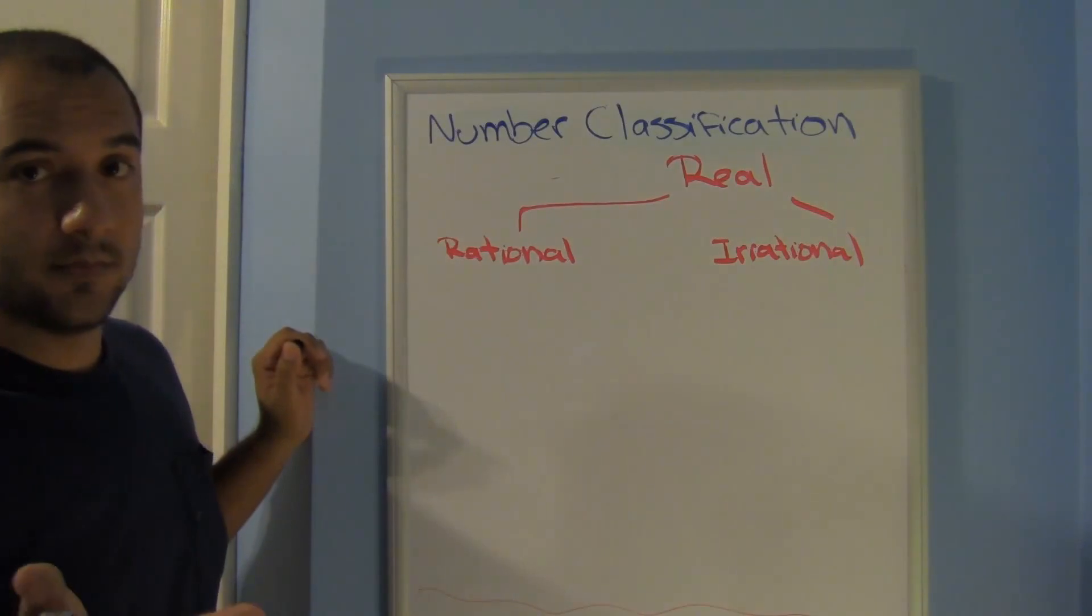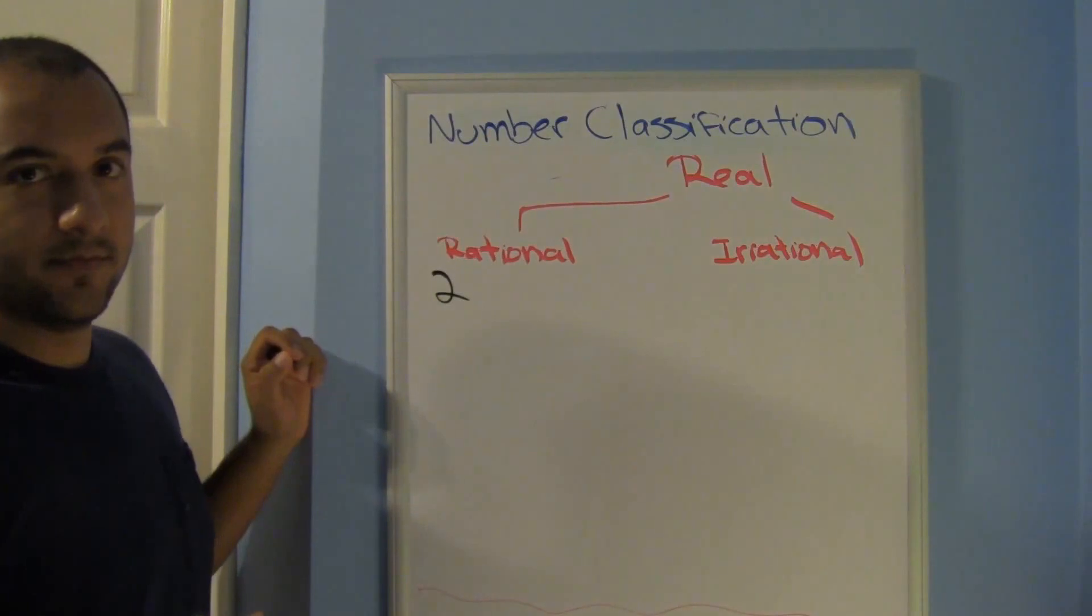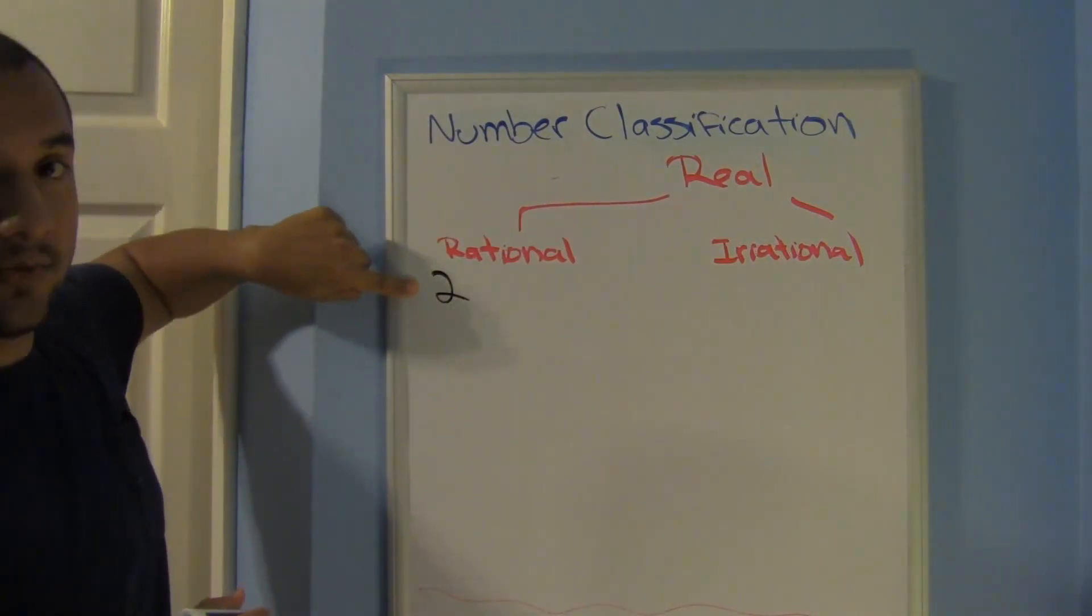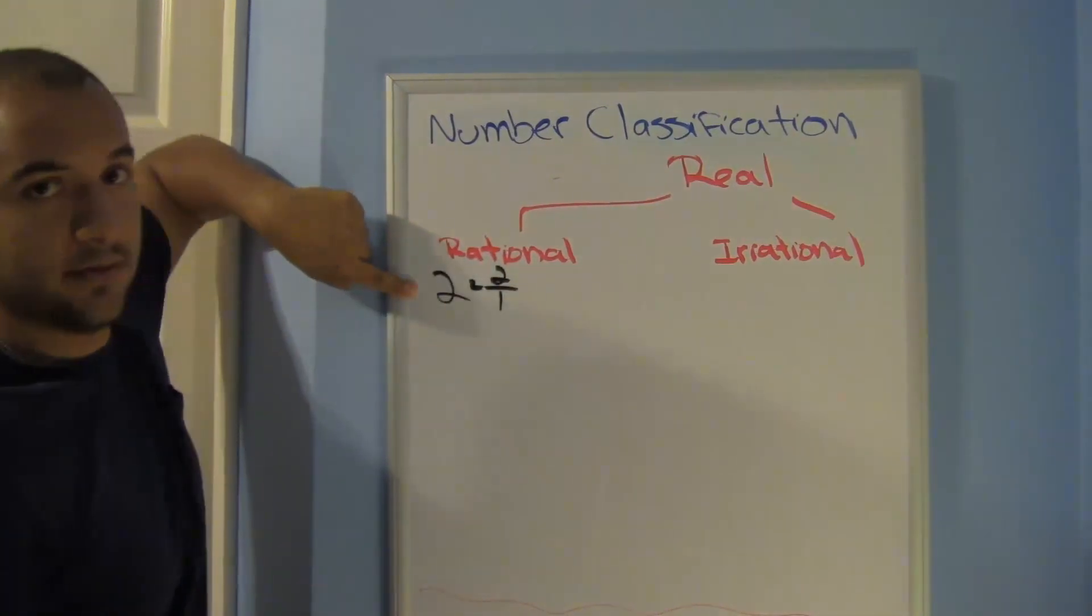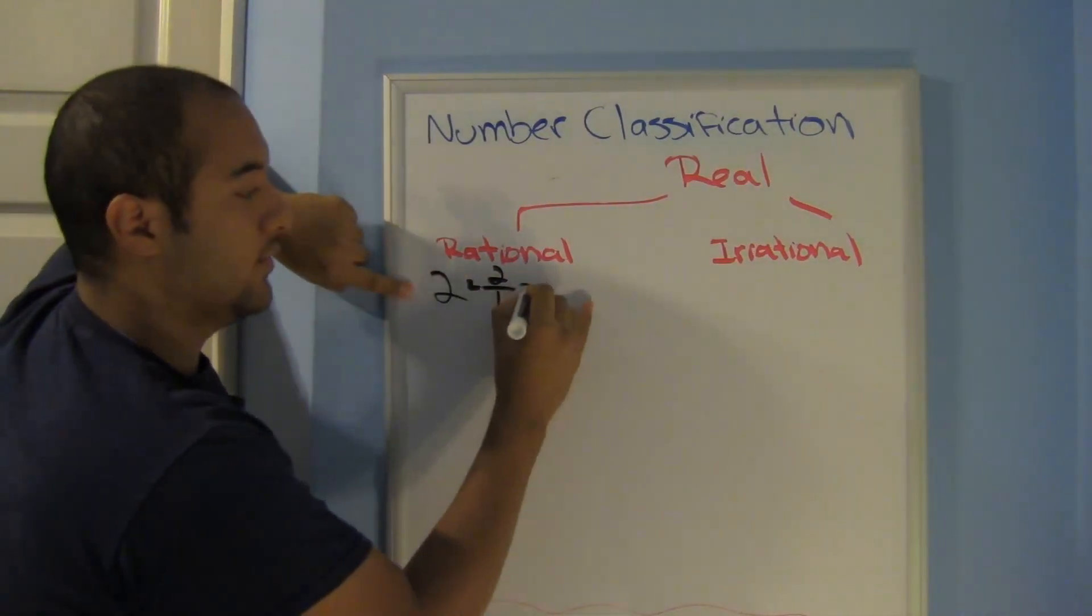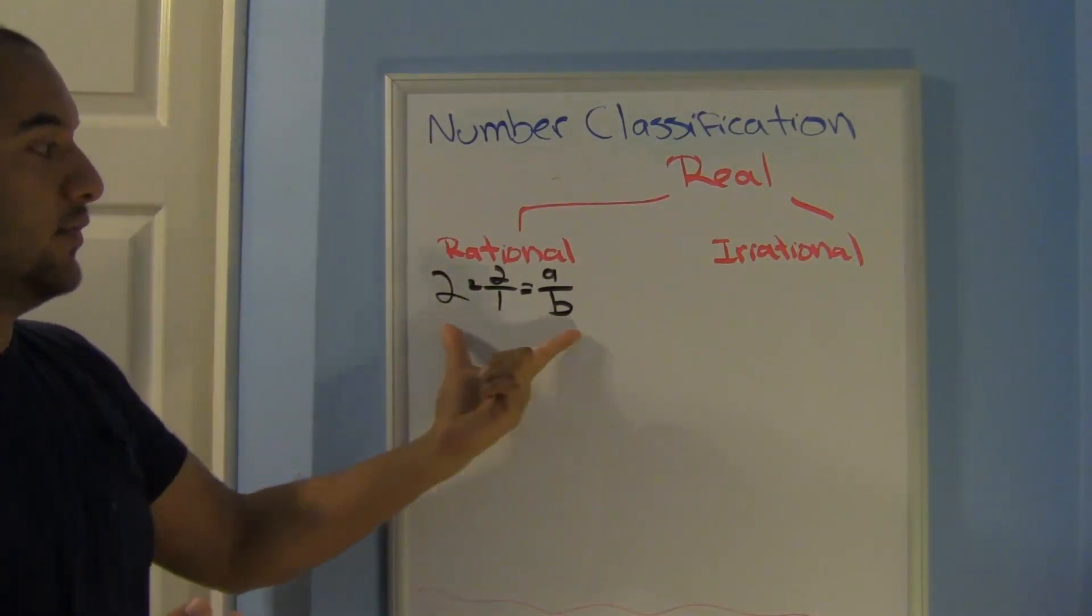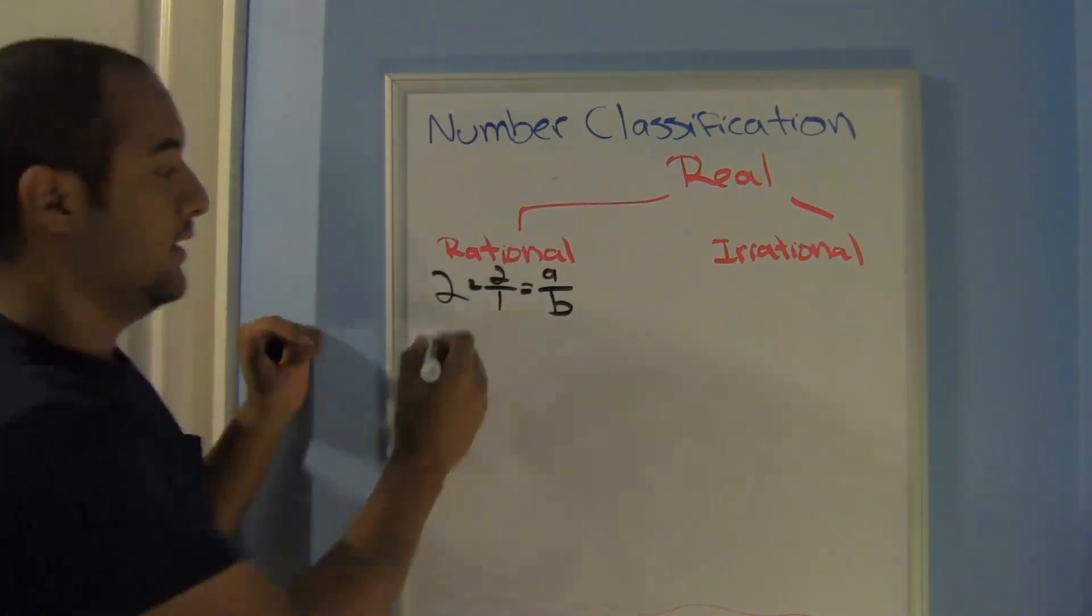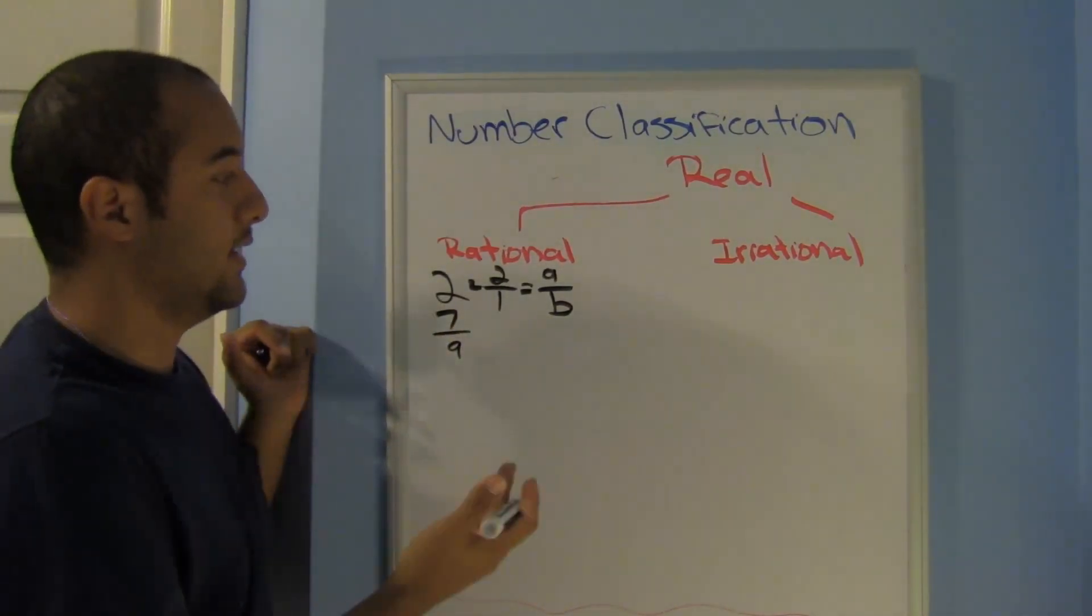Well, rational numbers can be written as fractions. So the numbers, 2 for example, well, it's not a fraction right now, but it can be written as a fraction. It can be written as 2 over 1. So that can be written as A over B, which is the way you're going to start looking at things. So here we have fractions, 7 over 9. There, we have a fraction.